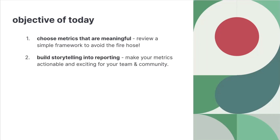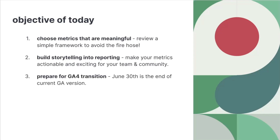We're going to walk you through a framework for how we select metrics from our website that are meaningful to our organization. Secondly, we're going to talk about how we build a story into our reporting. If you are in charge of reporting metrics out to different folks at your organization, how do we make them actionable? How do we make them exciting? How do we use them to elevate opportunities and also celebrate successes? Thirdly, the current version of Google Analytics called Universal Analytics expires June 30th. If you do not have the new version of Google Analytics set up on your website as of June 30th, you will no longer have data being collected from your website.